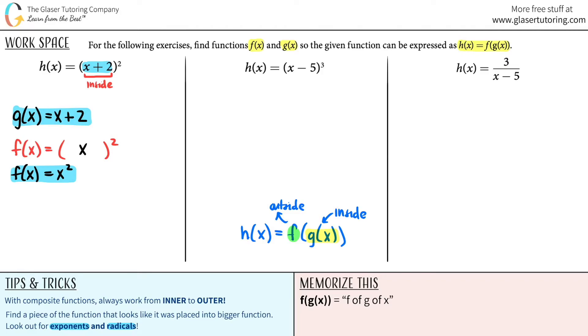So h of x is x minus 5 raised to the third. Was anything placed inside something else? This function looks like it was placed inside a bigger function that was raised to the third. The inside function is specifically g of x here. So g of x equals x minus 5.